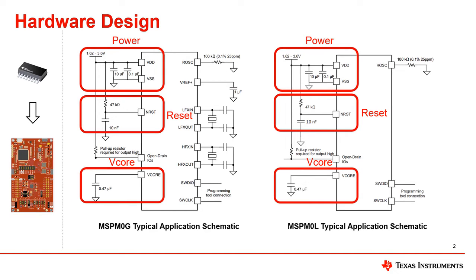Then the V core pin, which is the output pin of the MCU core voltage. This pin does not require external power and is also not allowed to be used for powering other circuits. An external capacitor of 0.47 microfarad is required for regulation of the core voltage. Ensure to place this capacitor close to the V core pin in the layout.